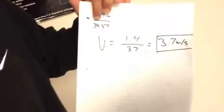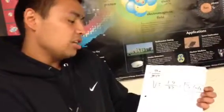But again, we want it in meters. So we divide that by 39.37 inches, and we got 1.4 meters. We plug that into our equation. So v equals 1.4 divided by 0.37, and that equals 3.7 meters per second.